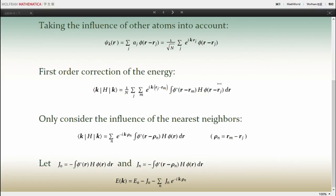Which is the diagonal entrance of the Hamiltonian matrix. Now we only consider the integration of the atom itself and its nearest neighbors. So we can further simplify the expression and we set J0 as the integration of the atom itself and Jn as the integration of its nearest neighbors.